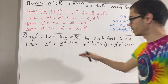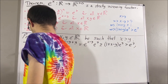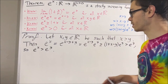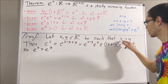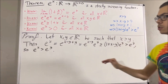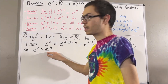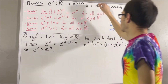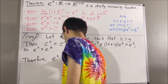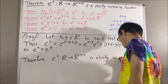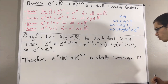Therefore, e to the x is greater than e to the y. What we've shown is: given any two real numbers x and y such that x is greater than y, it follows that e to the x is greater than e to the y. And that's what it means for this function to be a strictly increasing function. This completes the proof.